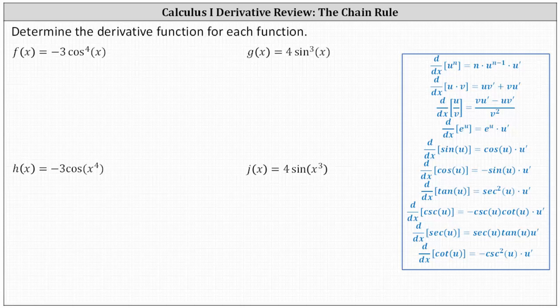We're asked to determine the derivative function for each given function. First, we have f of x equals negative three times cosine to the fourth x. The first thing to recognize here is that we have a composite function, and therefore to find the derivative function, we'll have to apply the chain rule.